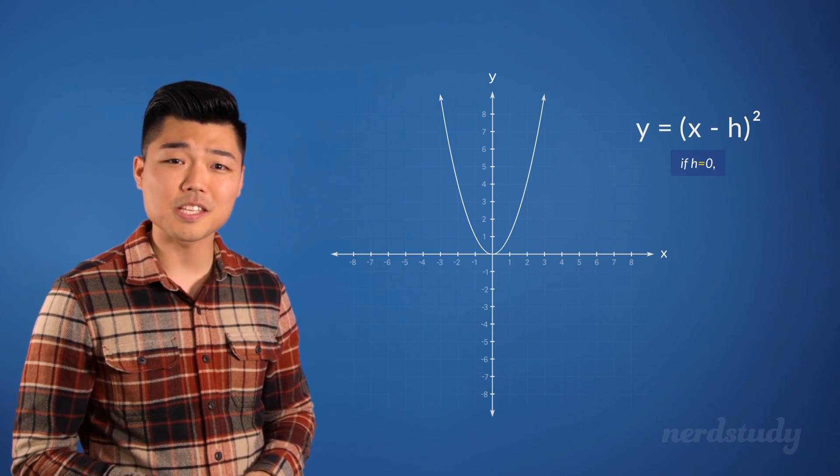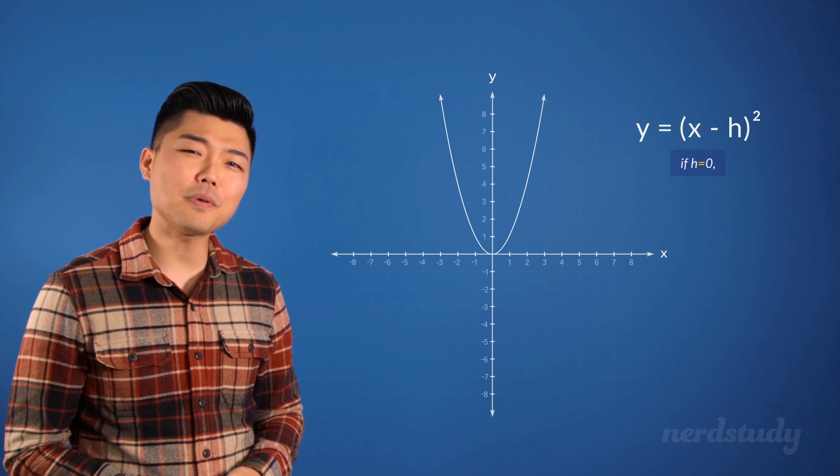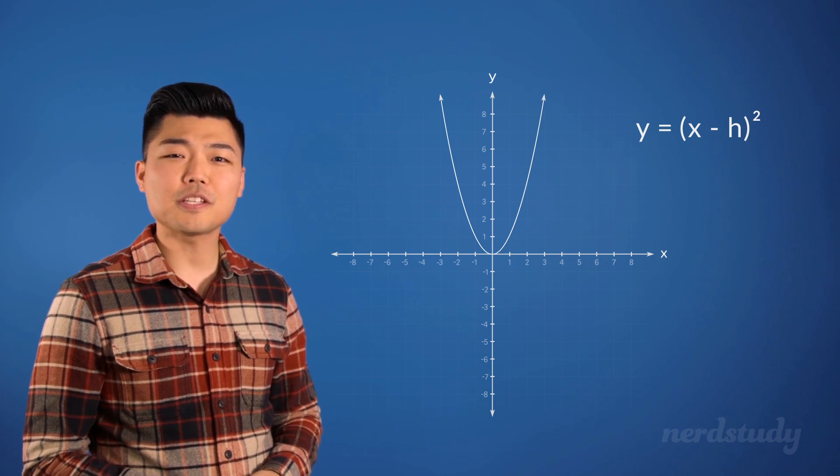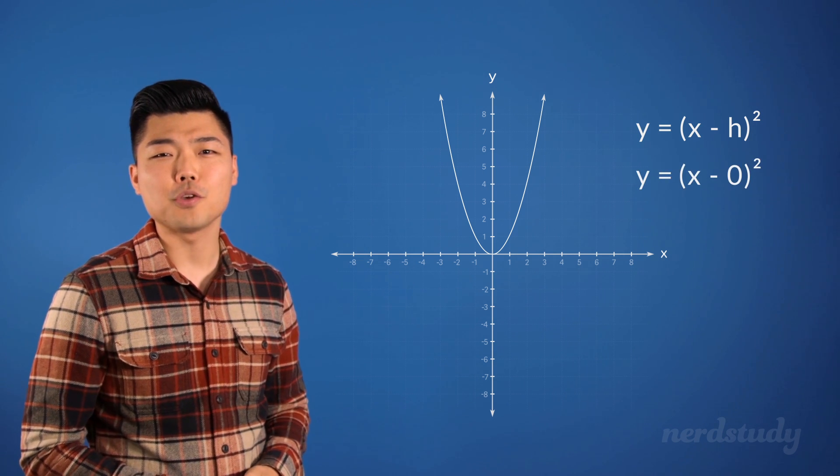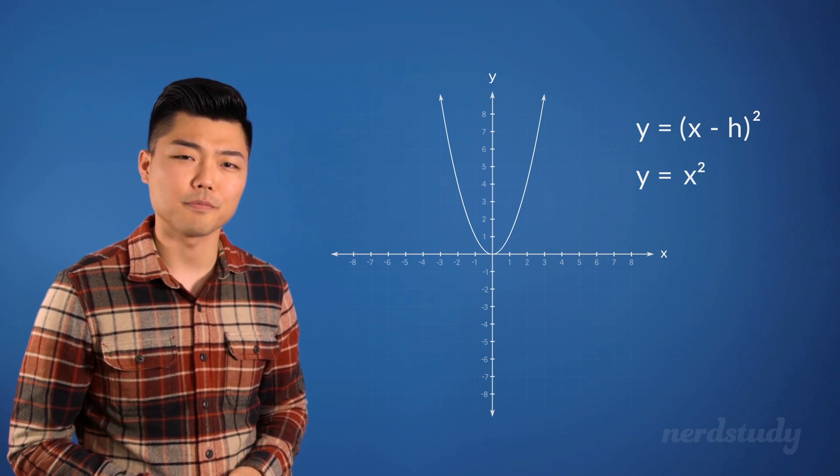Since it is neither moving to the right or the left, it should be the same graph, unmoved. And if you actually test this out by substituting 0 for h, you'd see that you end up with y equals x squared.